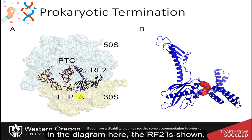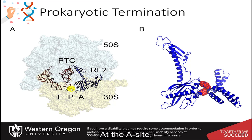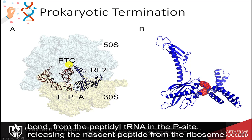In the diagram here, RF2 is shown by itself or bound with the ribosome at the A-site. Binding of the RF2 factor to the stop codon in the A-site triggers the hydrolysis of the peptide bond from the peptidyl tRNA in the P-site, releasing the nascent peptide from the ribosome.